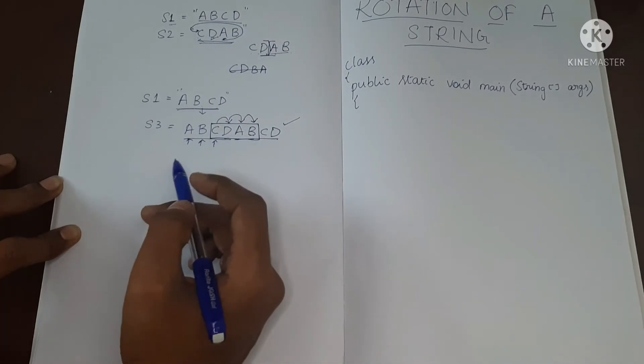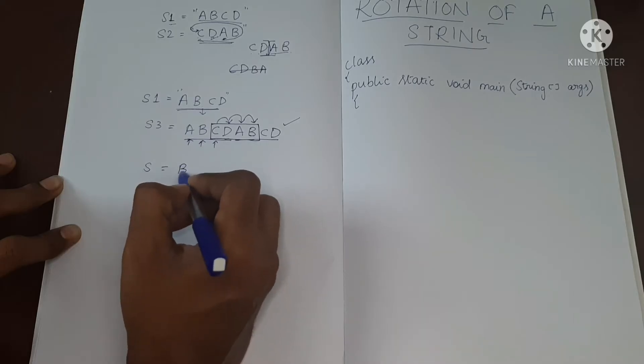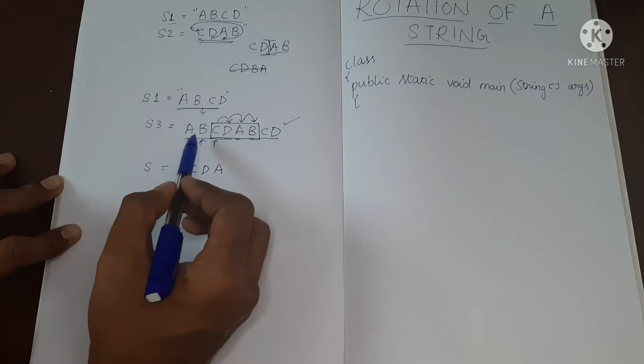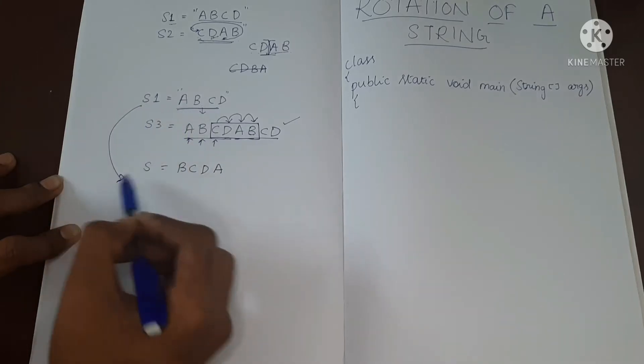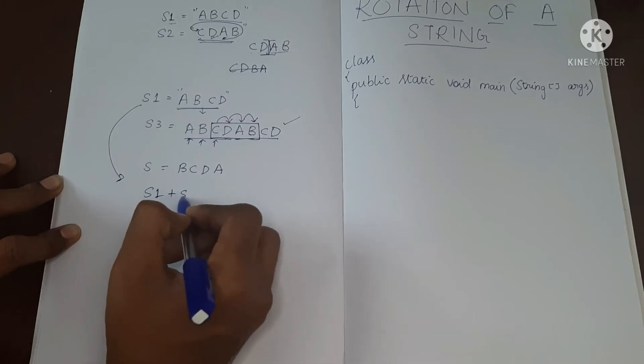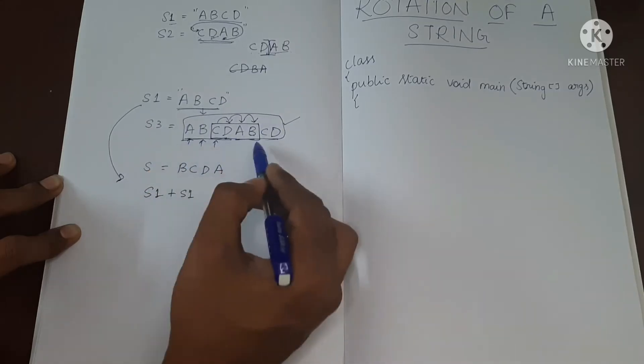You can try with various other examples also. Let's say we have a variable S as B, C, D, A. So we'll do the same thing. We'll take S1 plus S1, this is same as this, this is S1 plus S1.